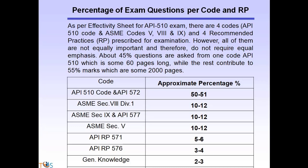However, all of them are not equally important and therefore do not require equal emphasis. About 45% of questions are asked from one code, API 510 alone, which is some 60 pages long, while the rest contribute to 55% of marks, which are some 2000 pages. API 510 code and API 572 would constitute around 50% of the questions.